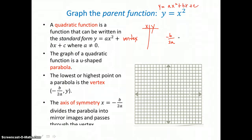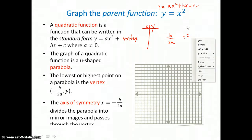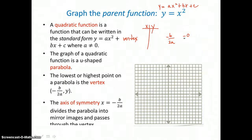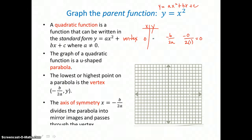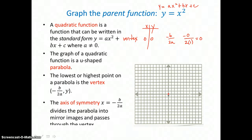So for this parent function, our b value is 0 — there's no x term, so 0 is multiplied to x. Our a value is multiplied to x squared, and our a value is positive 1. So we have negative 0 over 2 times 1, and 0 divided by 2 is 0. So the x-coordinate of the vertex is 0. When I put 0 in for x, 0 squared is 0, so I get a y-coordinate of the vertex of 0 also. So the origin is the vertex of this parent function, this u shape.